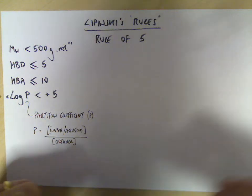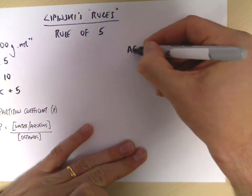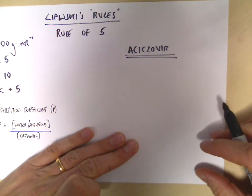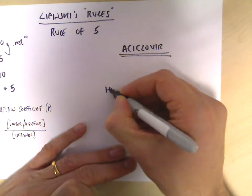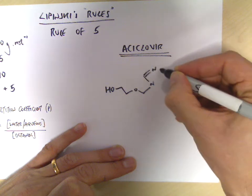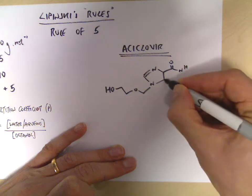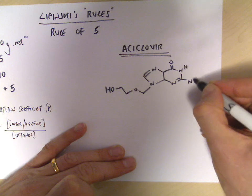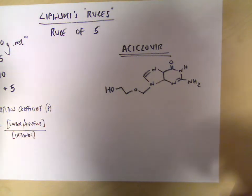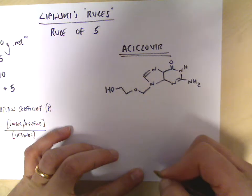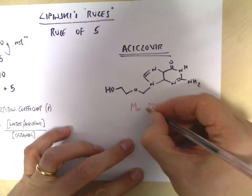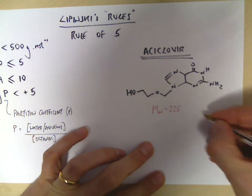Let's have a look at an example — I want to look at acyclovir. Acyclovir is an antiviral drug; it's orally available, it's taken by mouth, and its structure looks like this. That's its chemical structure and we know it's already available because it's a common drug. If you add up all the carbons, hydrogens, oxygens and nitrogens, this molecule has a molecular weight of 225, which is obviously less than 500, so that particular rule is satisfied.